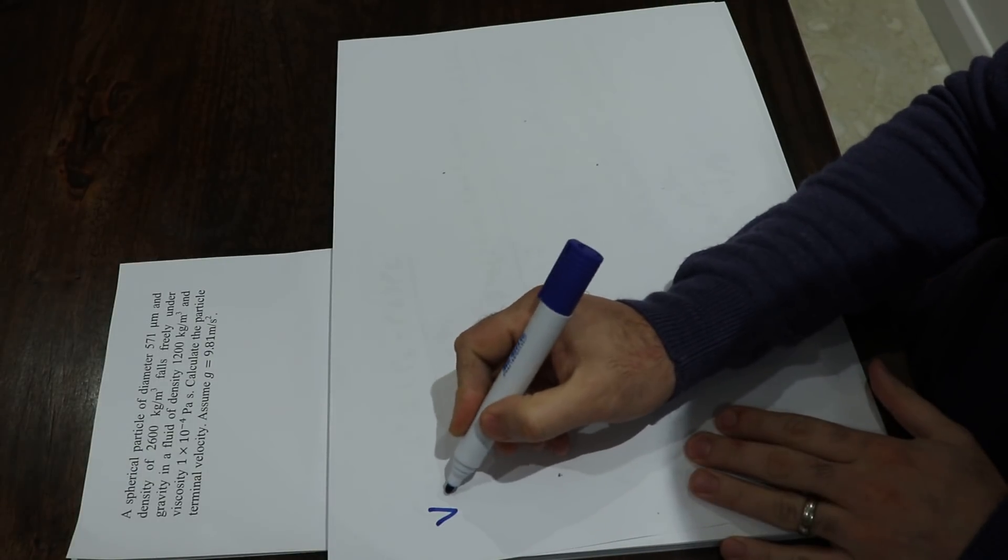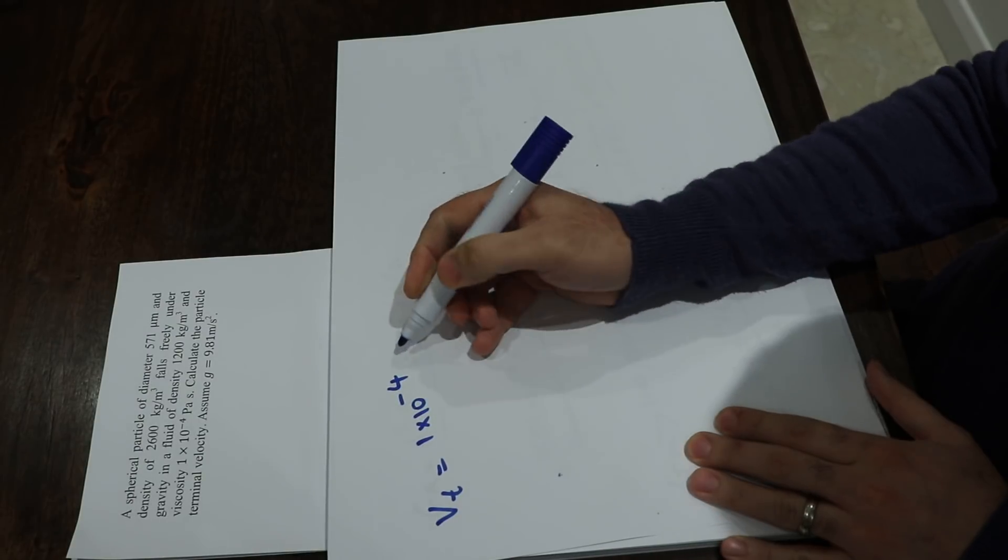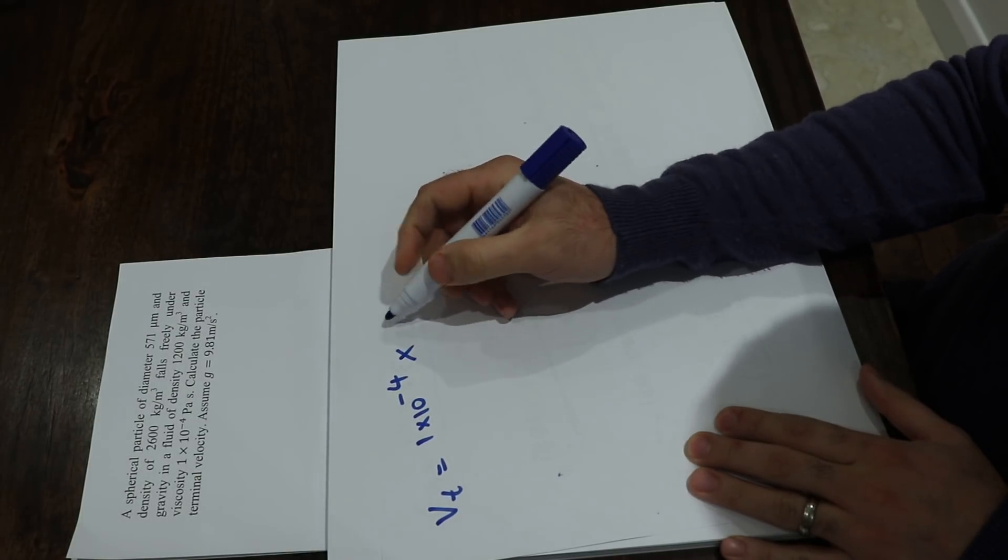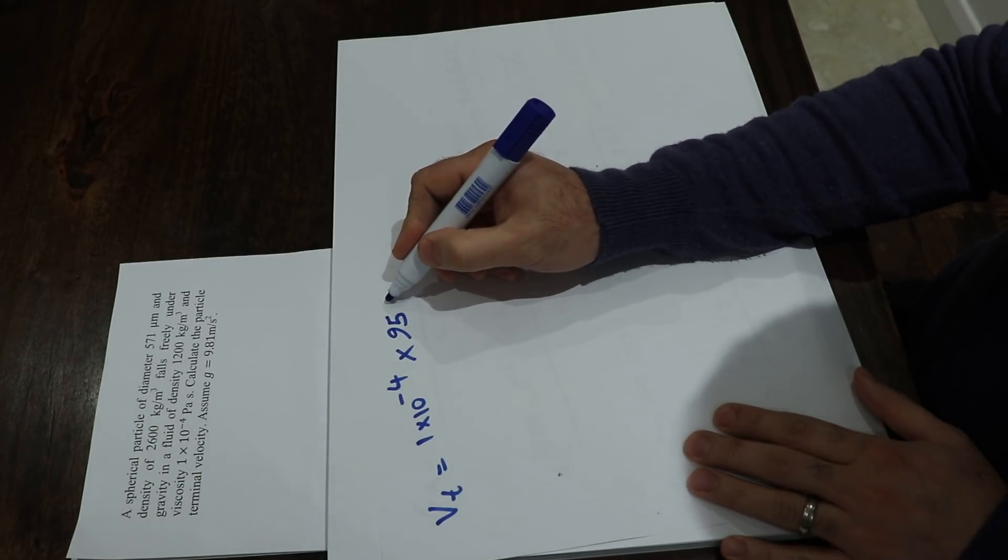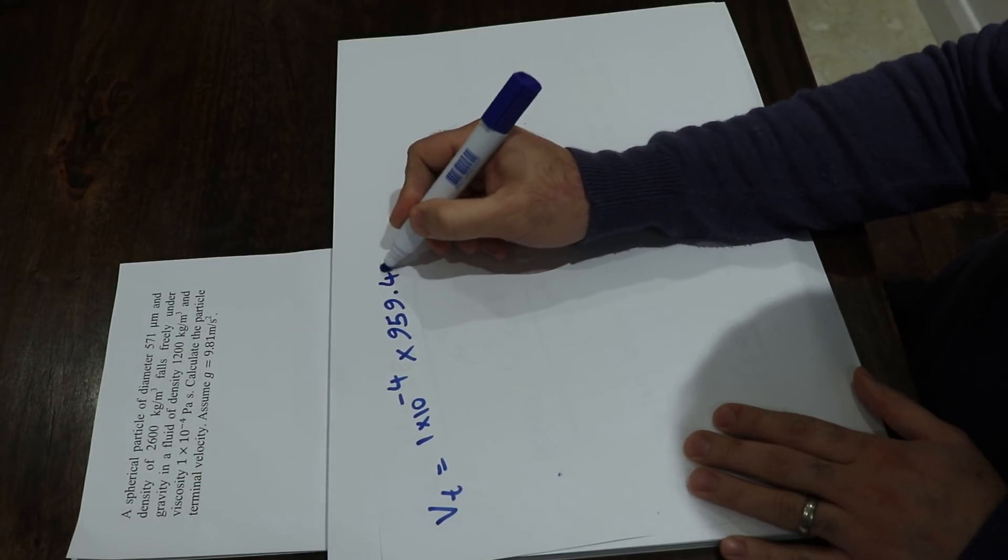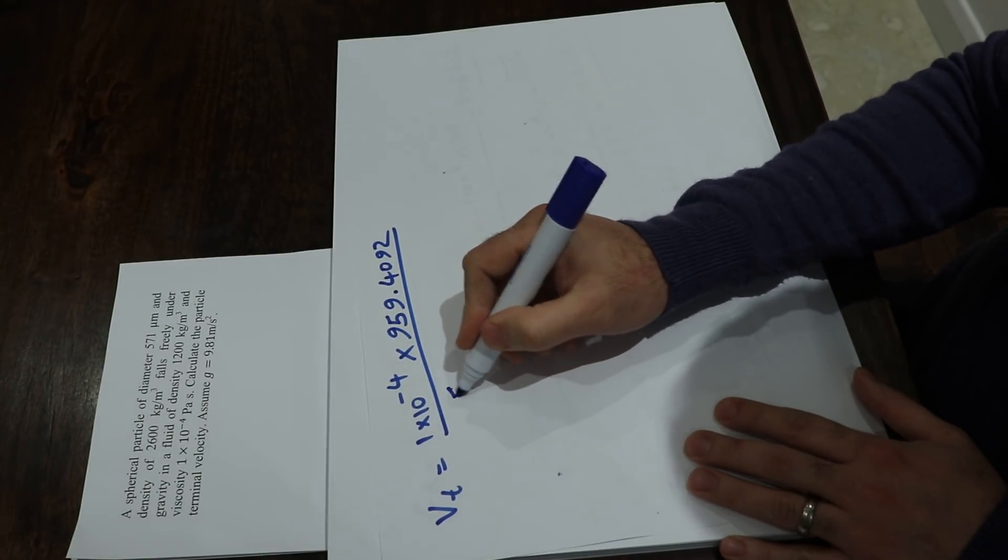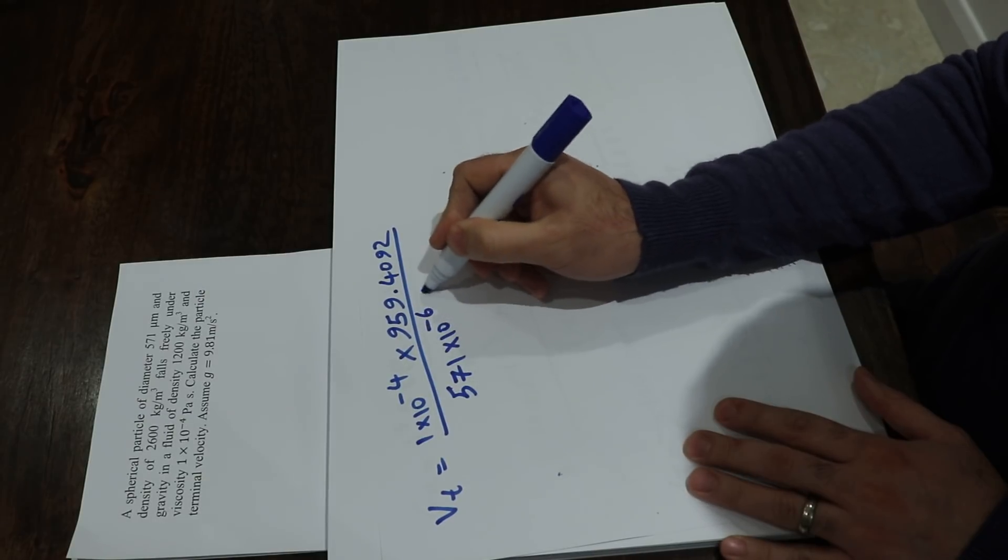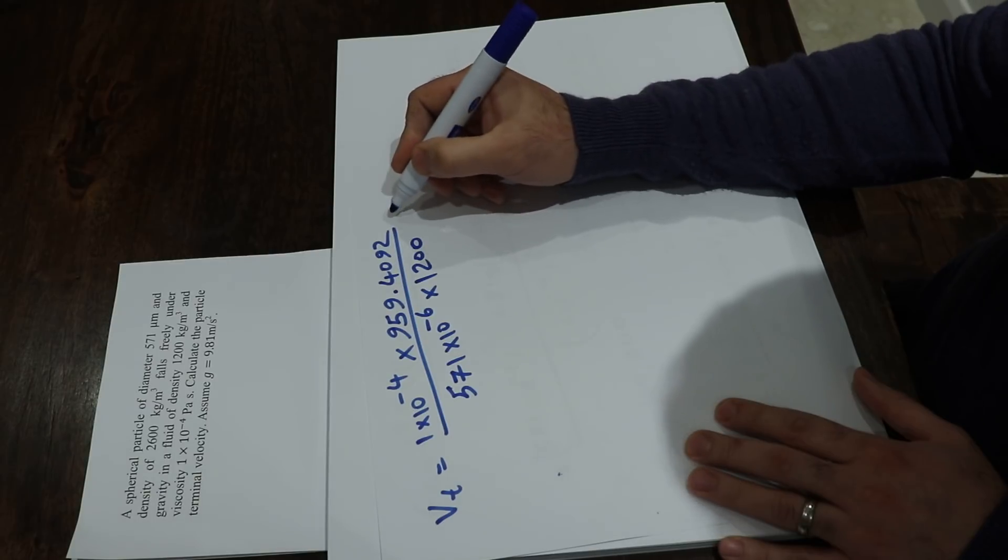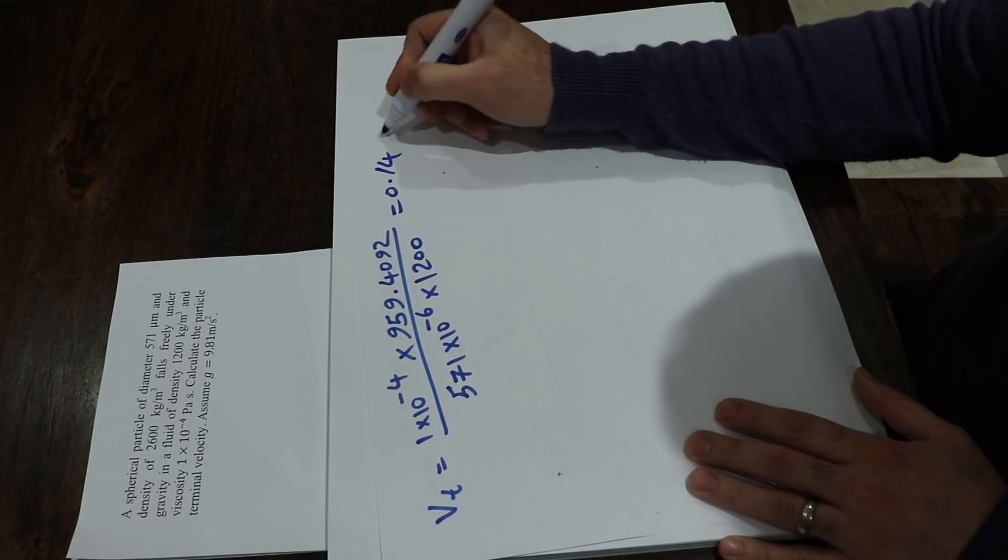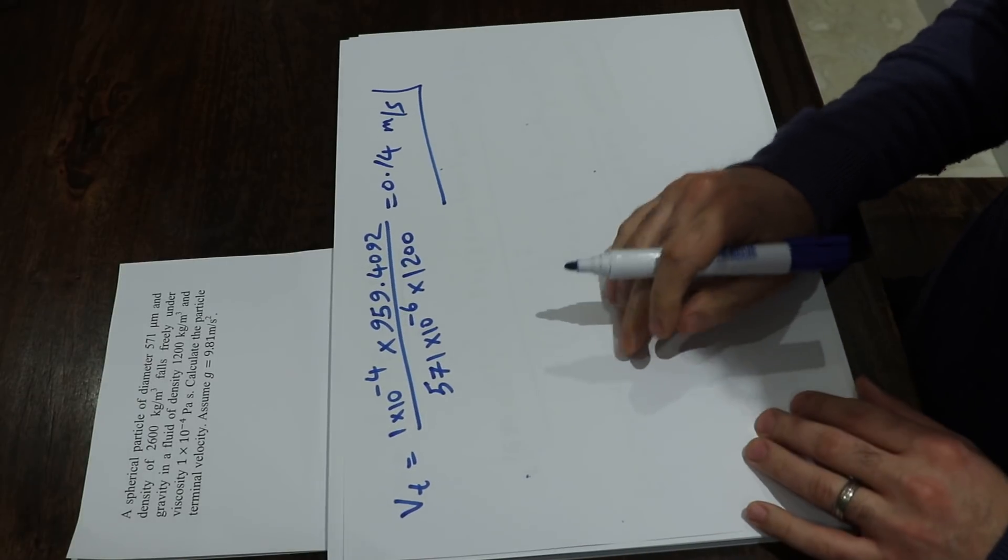Therefore, vt will be equal to 1 times 10 to the minus 4, that is the viscosity times Reynolds number, which you already calculated, 959.4092 divided by particle size, that is 571 times 10 to the minus 6 times density, that is 1200. And that will be equal to 0.14 meter per second. And that's the answer to this question.